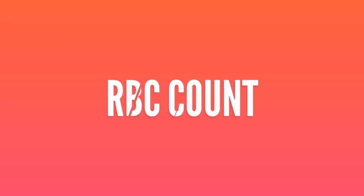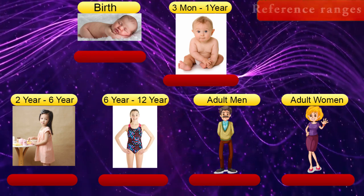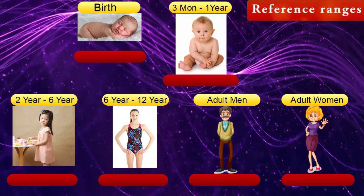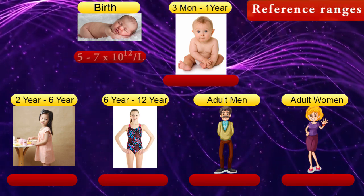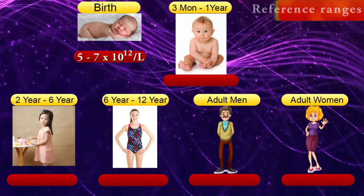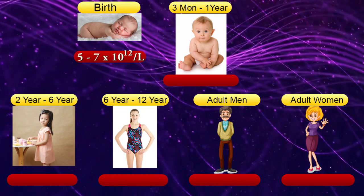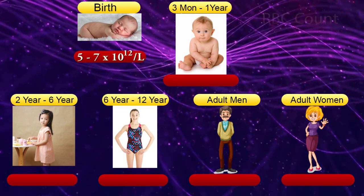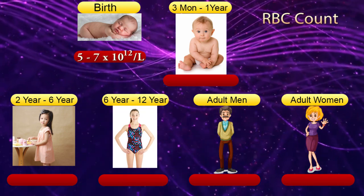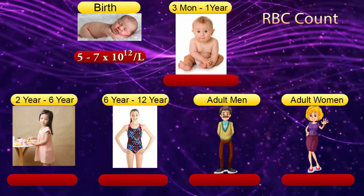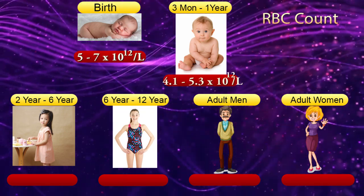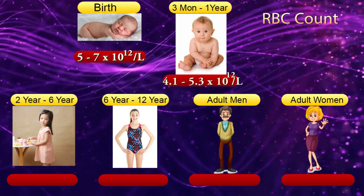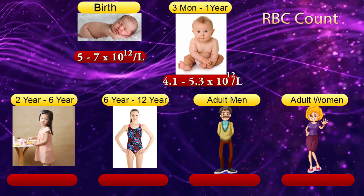RBC Count reference ranges. At birth: 5–7 × 10¹² cells per liter. From 3 months to 1 year: 4.1–5.3 × 10¹² cells per liter.